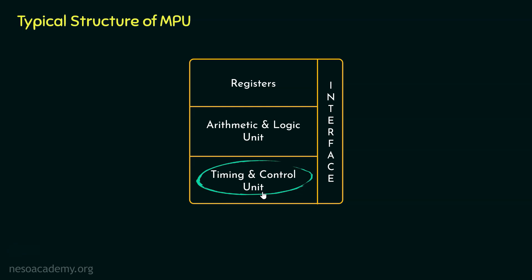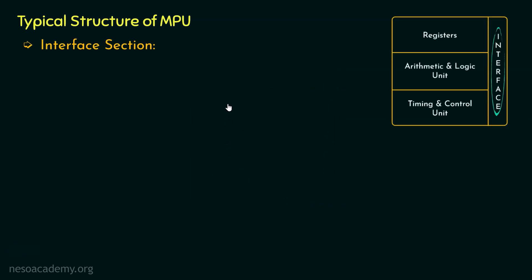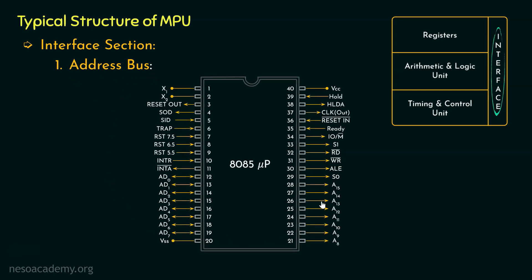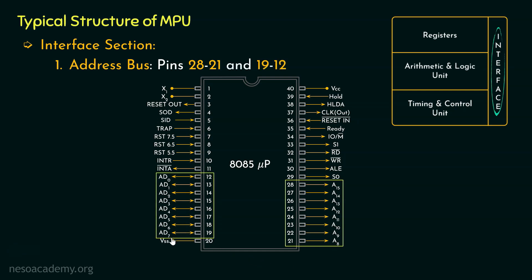After the Timing and Control Unit, we have the last section, that is the Interface section. The microprocessor has a number of pins for communication with the outside world, called the System Bus. This includes the Address Bus at first. Till the previous session, we already have learnt about all the different pins of the 8085 microprocessor. The Address Bus of the 8085 microprocessor comprises the pins from 28 to 21, that is pins A15 to A8. Also, the pins from 19 to 12, that is A7 to A0. We already have learnt about them in detail in our previous sessions.